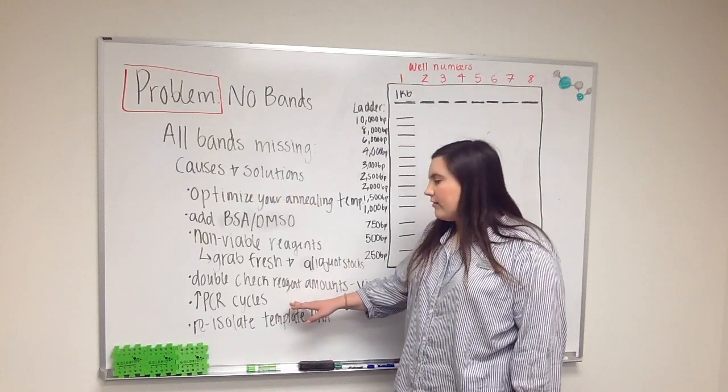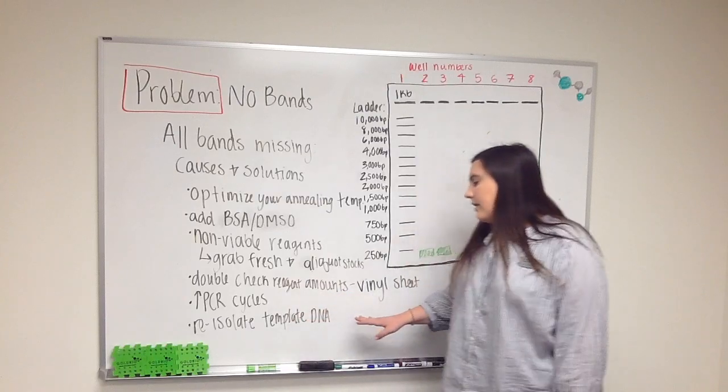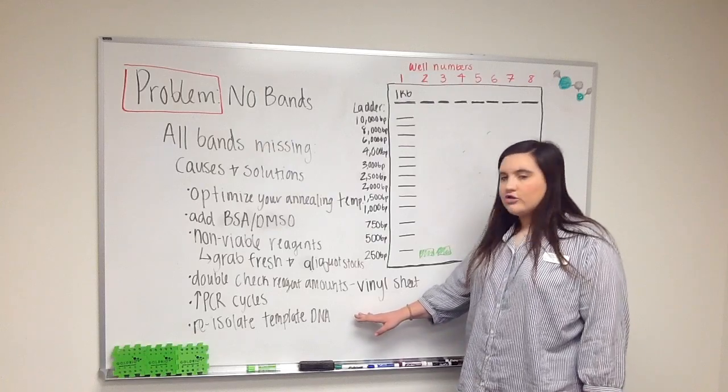You can also increase the amount of PCR cycles and re-isolate your template DNA so that you know you have good quality DNA that you're trying to amplify.